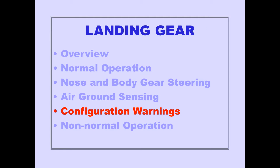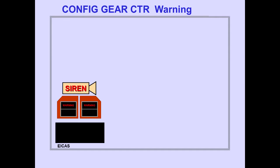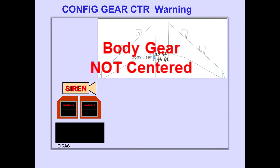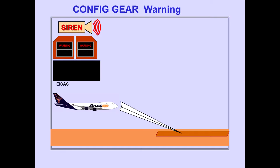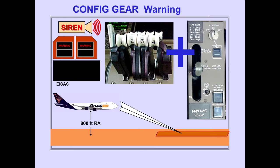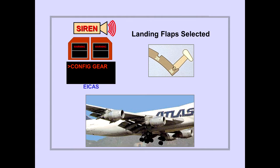The ICAS warning message 'configuration gear center' is displayed when either body gear is not centered and thrust lever 2 or 3 is advanced for takeoff. On approach below 800 feet radio altitude, the ICAS warning message 'configuration gear' is displayed with any throttle at idle and any landing gear not down and locked. The ICAS warning message 'configuration gear' is also displayed when landing flaps are selected and any landing gear is not down and locked.